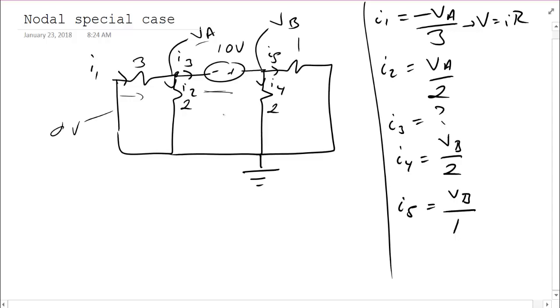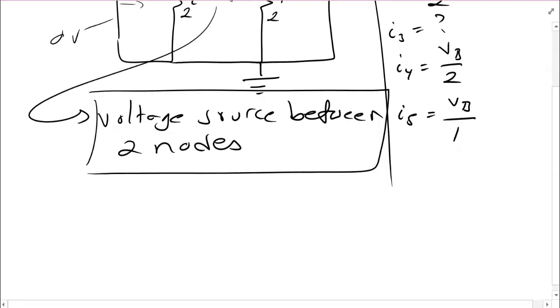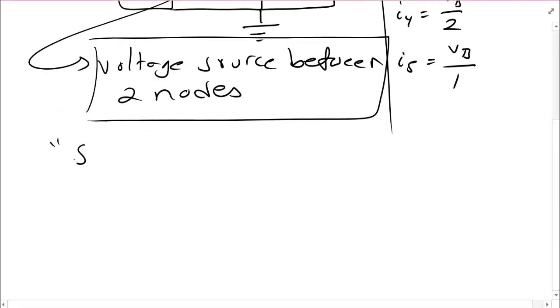Now, the key here is that I had a voltage source between two nodes. This is where the problem arises. Voltage sources don't have a voltage to current relationship because it depends on the rest of the circuit. So this is the special case. Whenever you have a voltage source between two nodes, you have to use this special case.